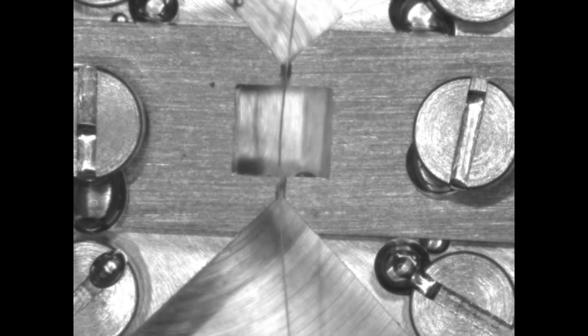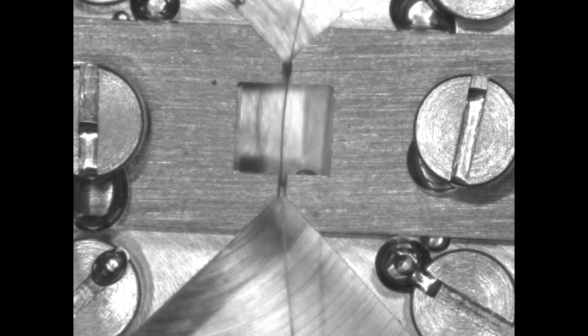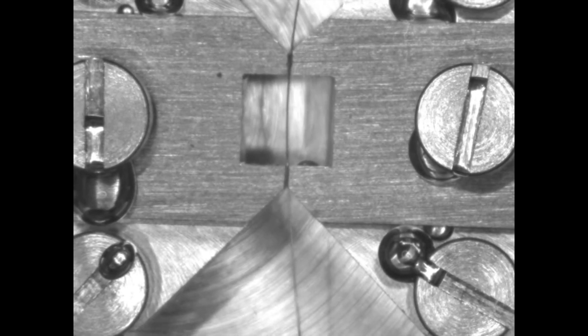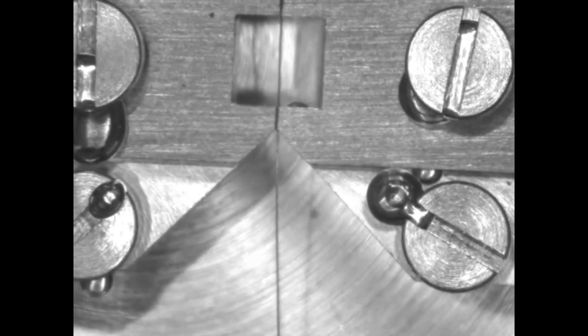After dissection, we need to mount the vessel in the 620M chambers. You will place a section of the wire between the jaws. You just need to clamp it in place. You do not need to press too hard as you could damage the force transducer.